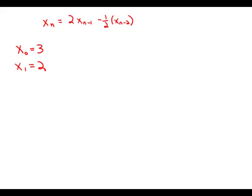In a certain sequence, the term x sub n is given by the formula, and we have this complicated formula for all n greater than or equal to 2. If x sub 0 equals 3 and x sub 1 equals 2, what is the value of x sub 3?